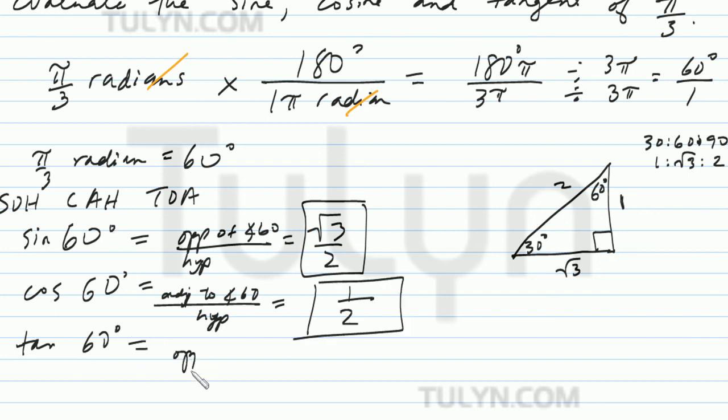And then tan is opposite, is TOA. So opposite of angle 60 over adjacent to angle 60. And opposite of angle 60 is going to be radical 3. And adjacent to angle 60 is going to be 1, right here. Because it's right along the side. Adjacent means along the side of. So then, go ahead and put it over 1. Radical 3 divided by 1 is radical 3. So then, tan of 60 is going to be radical 3.